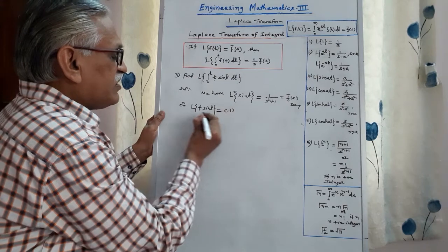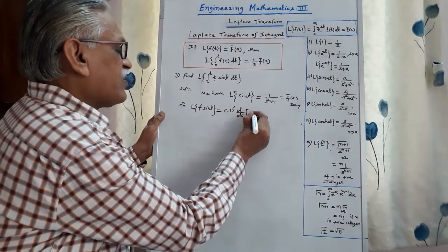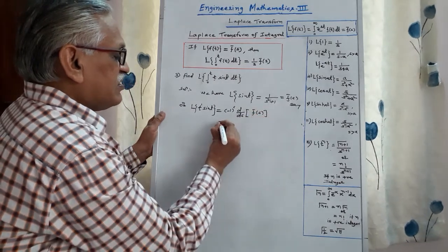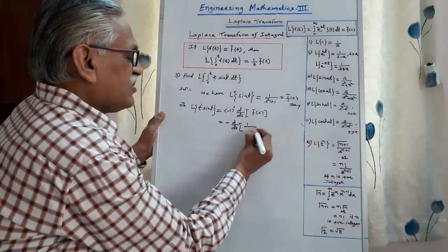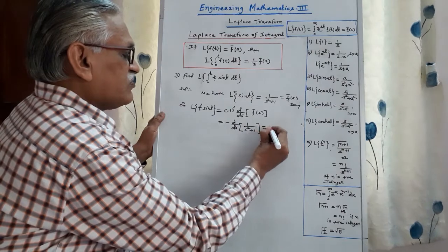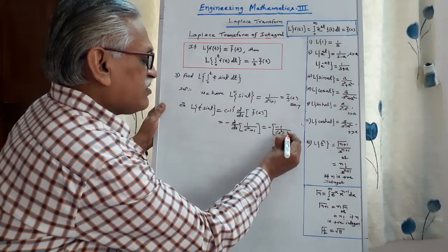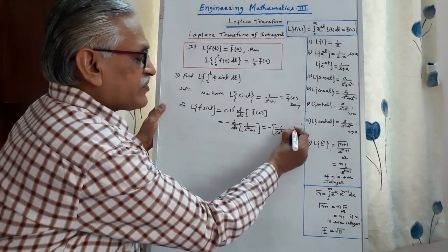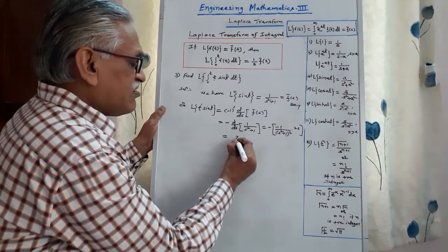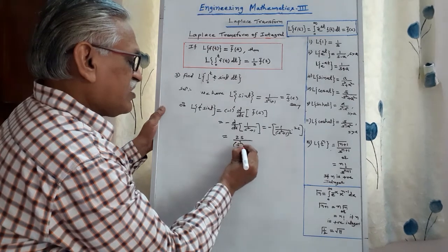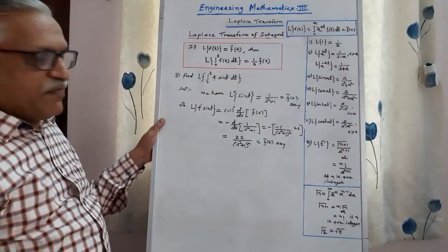Using the theorem for multiplication by t^n, we get it is (−1)^n times the nth-order derivative — here n = 1, so (−1)¹ times d/ds of F̄(s). F̄(s) is 1/(s² + 1). The derivative of 1/x is −1/x², so it becomes −[−1/(s² + 1)²]·(2s) by the chain rule. Simplifying, minus times minus becomes plus: 2s/(s² + 1)², and we call this the new F̄(s).